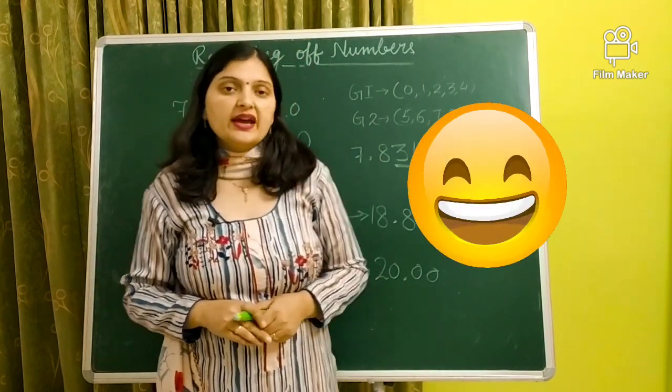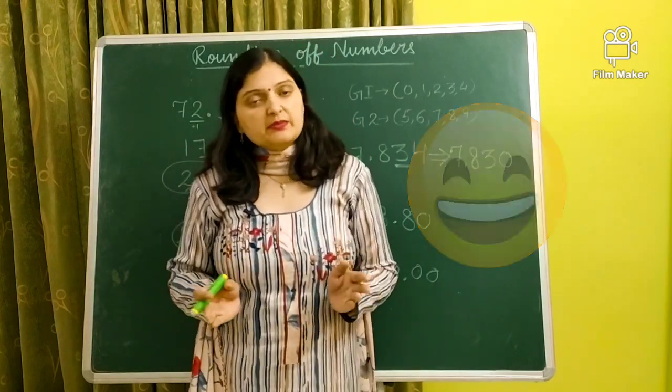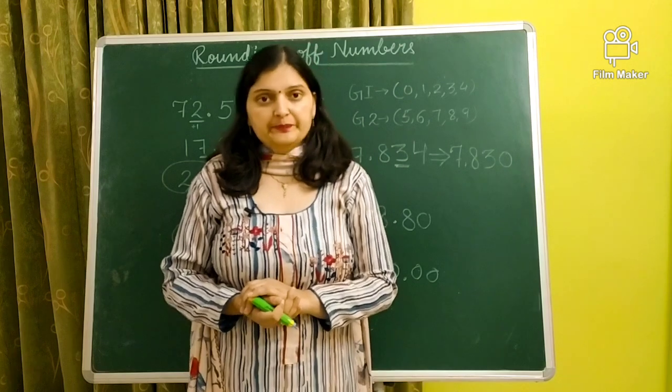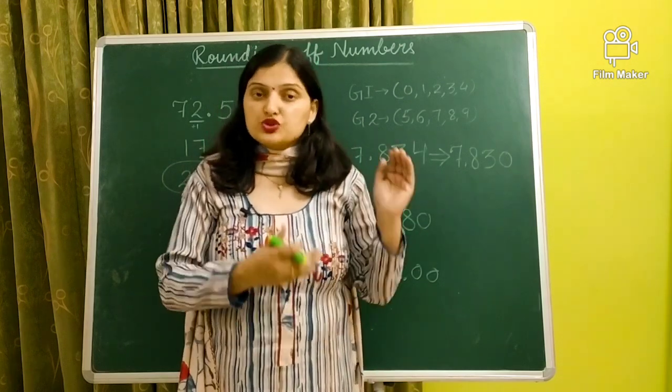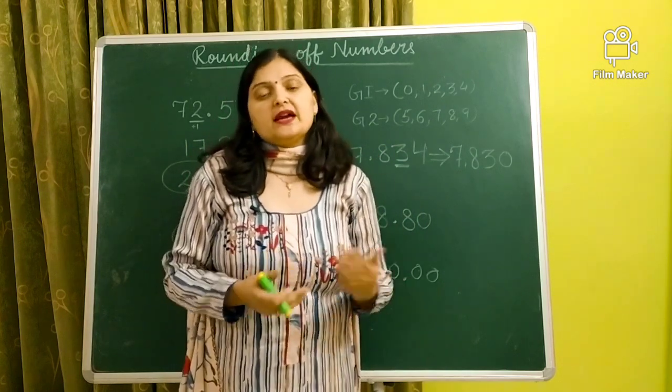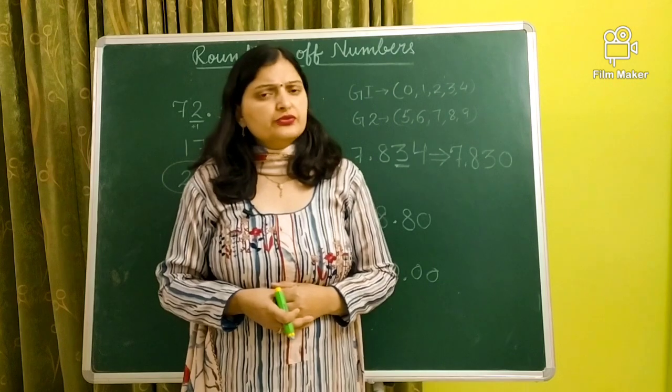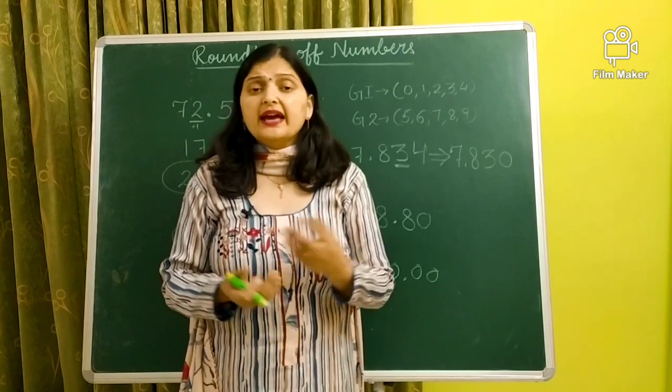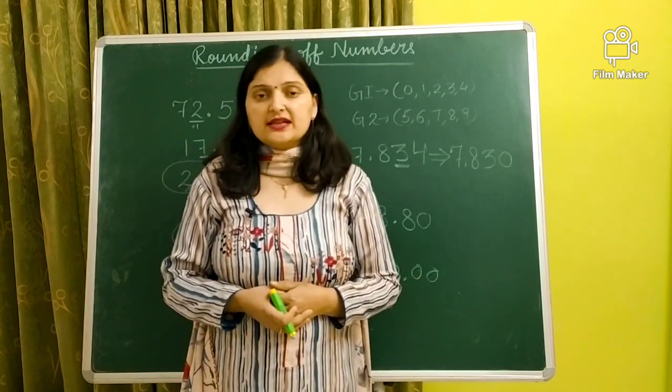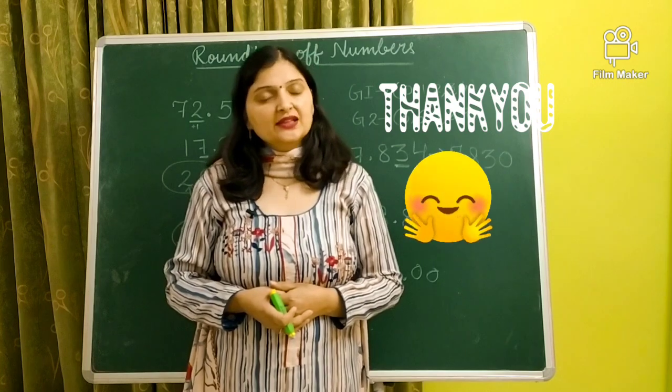So you saw, rounding of numbers. Now in numbers also, decimal numbers and whole numbers, the steps remain same. The rules we discussed in the starting, all of them are exactly same. So if you learn those rules once and with the help of that short trick also you can take help. Then you can do rounding according to any place. Once again, there are so many questions given in your book. So you can take the help of your book. You can solve lots of questions and you can improve your concept of rounding of numbers. So do more and more practice. Till then, thank you and bye bye.